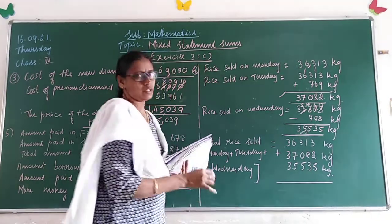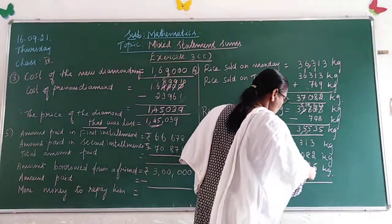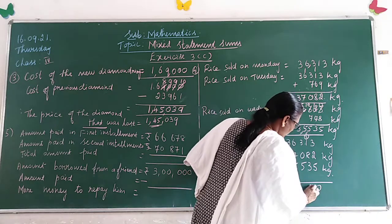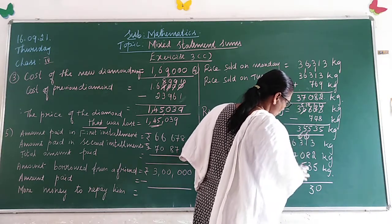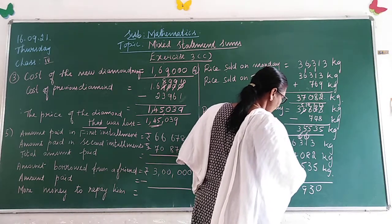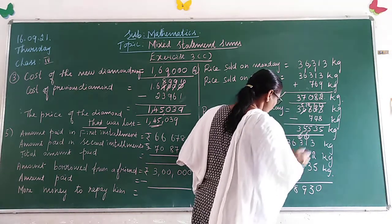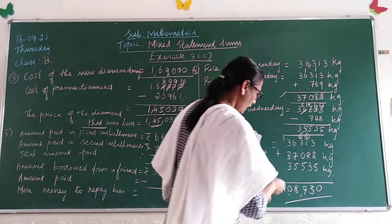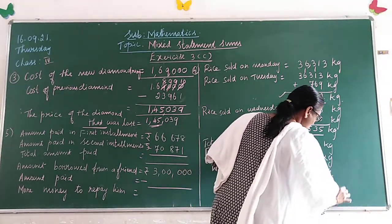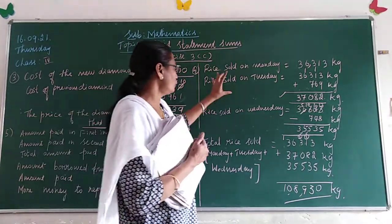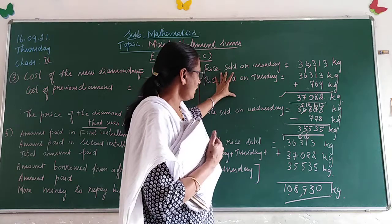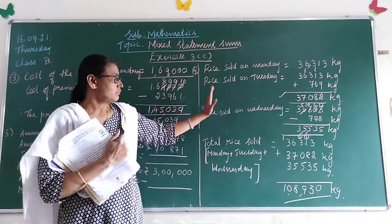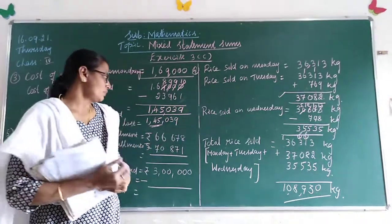Now, total rice sold over three days. Add Monday (36,313) plus Tuesday (37,082) plus Wednesday (35,535). Adding step by step: 5+2=7, 3+8=11 carry 1, and so on — total rice sold is 1,08,930 kg of rice for three days. You have to do it step by step and write the steps neatly. It will be very easy if you think and write clearly.